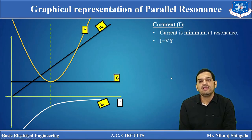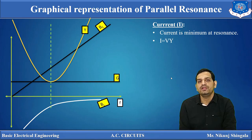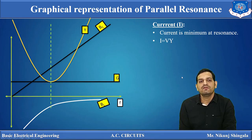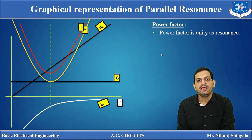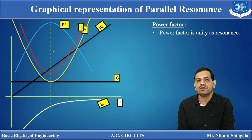Next is current. Since I = V/Z and admittance is the reciprocal of impedance, I = V·Y. At resonance, admittance is minimum, so current is also minimum. Beyond and below resonance, admittance increases and so does current — giving the current graph the same shape as the admittance graph. For power factor: power factor is unity at resonance. Power factor = G/Y. At resonance, Y = G, so power factor equals unity. It decreases on both sides of the resonance frequency.